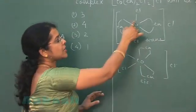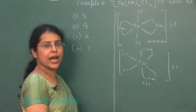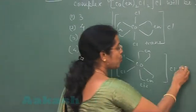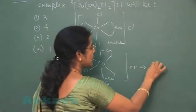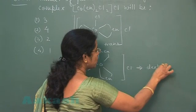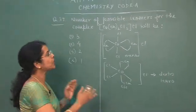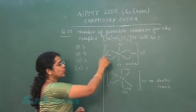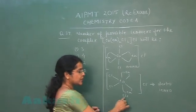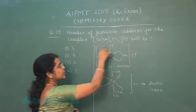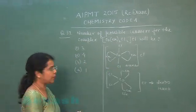Now trans isomer is optically inactive but cis isomer is optically active. So two isomers will exist. One is dextro, one is levo. So total number of isomers for this complex is cis dextro compound, cis levo compound, and this trans isomeric compound.